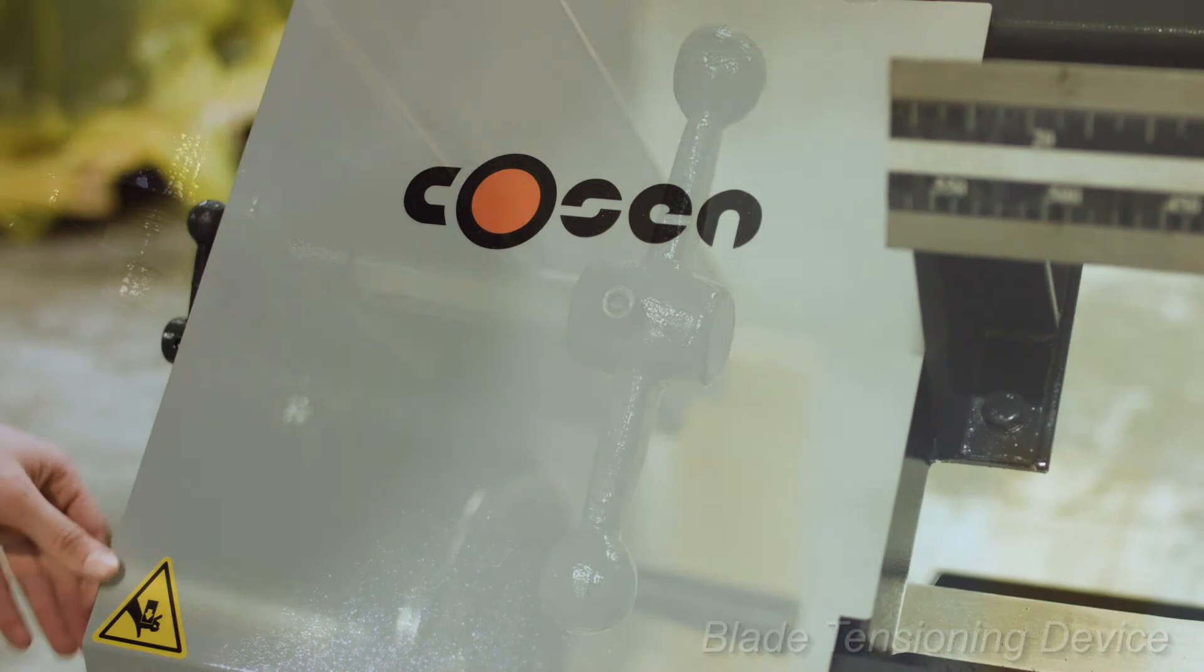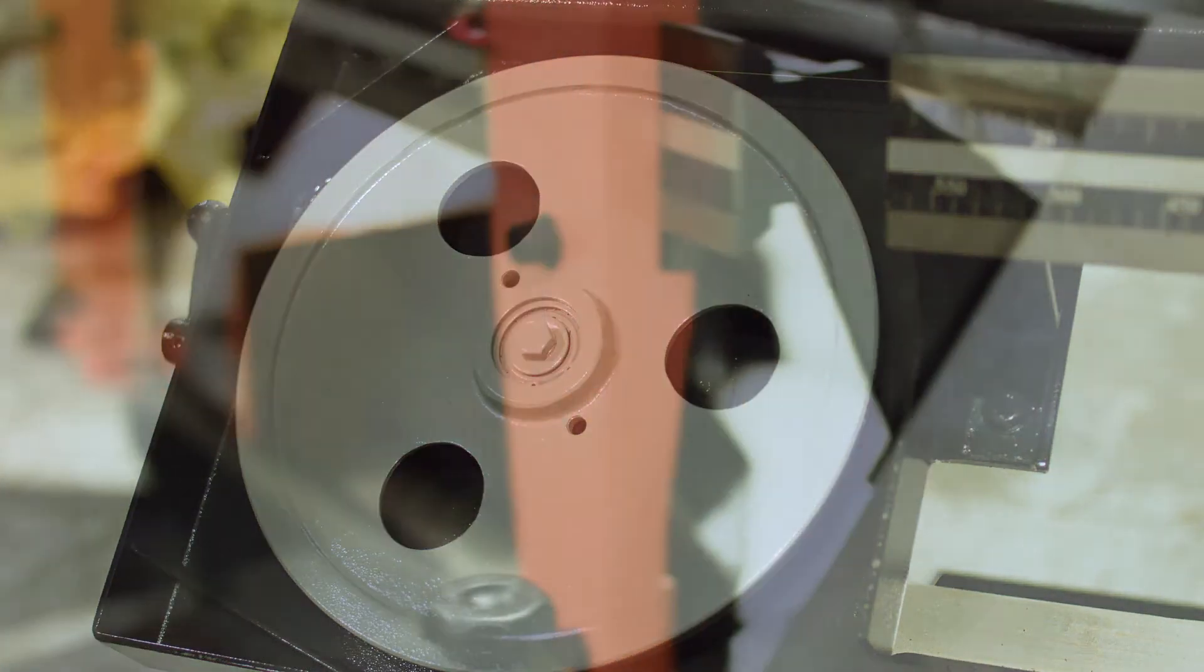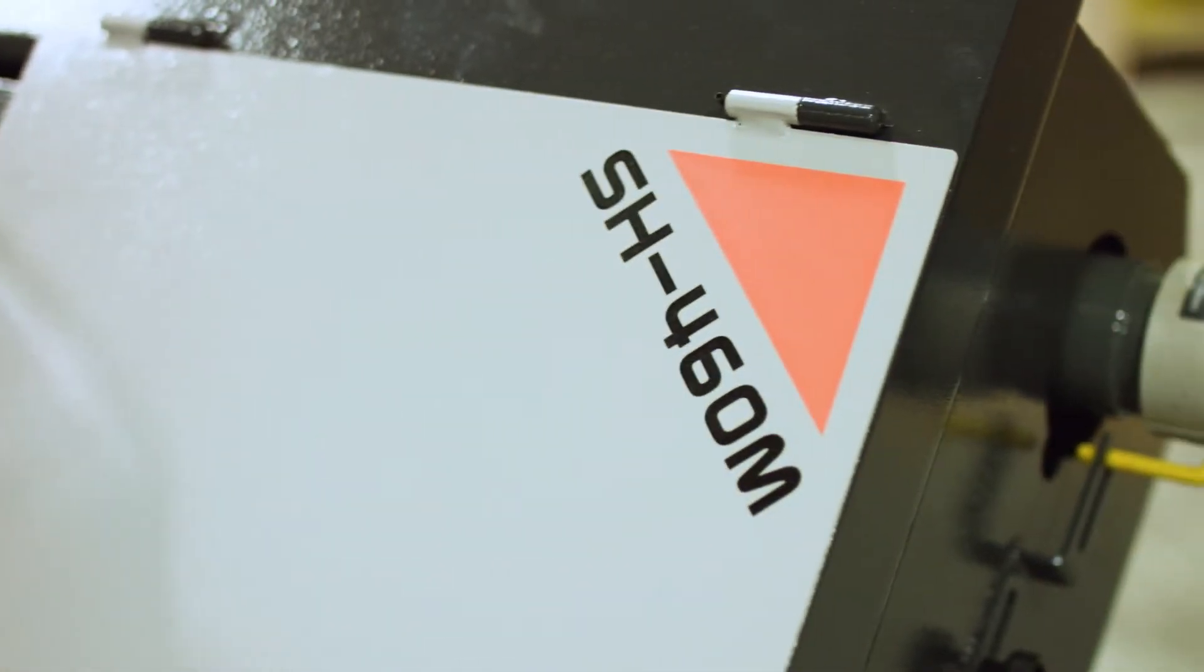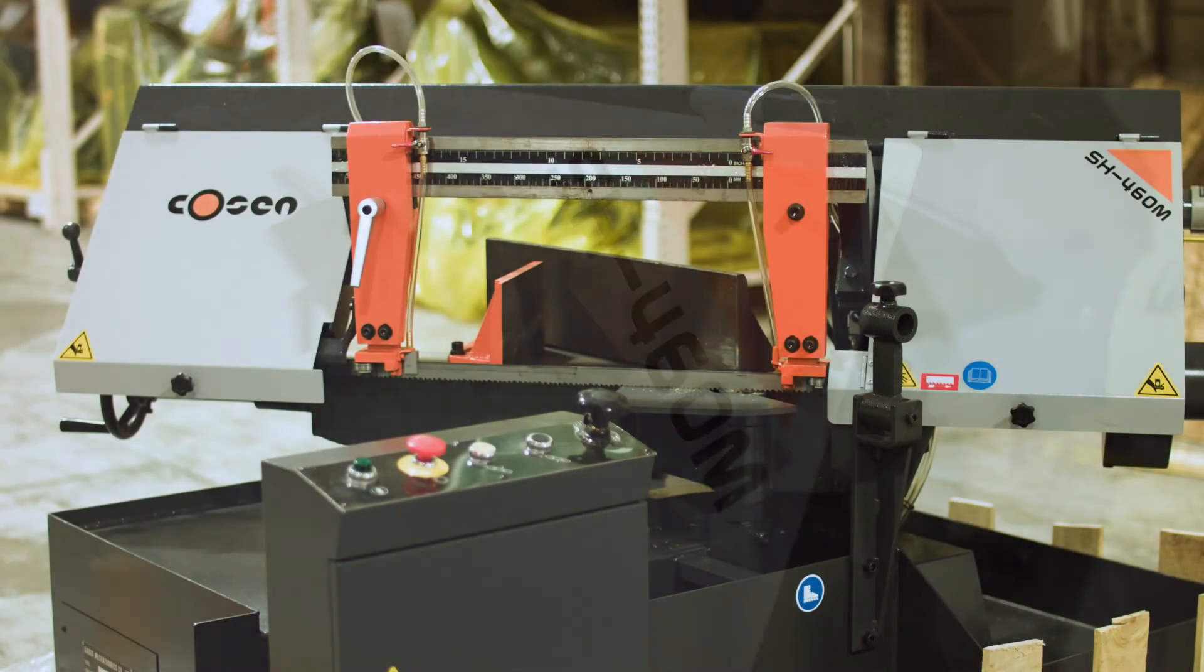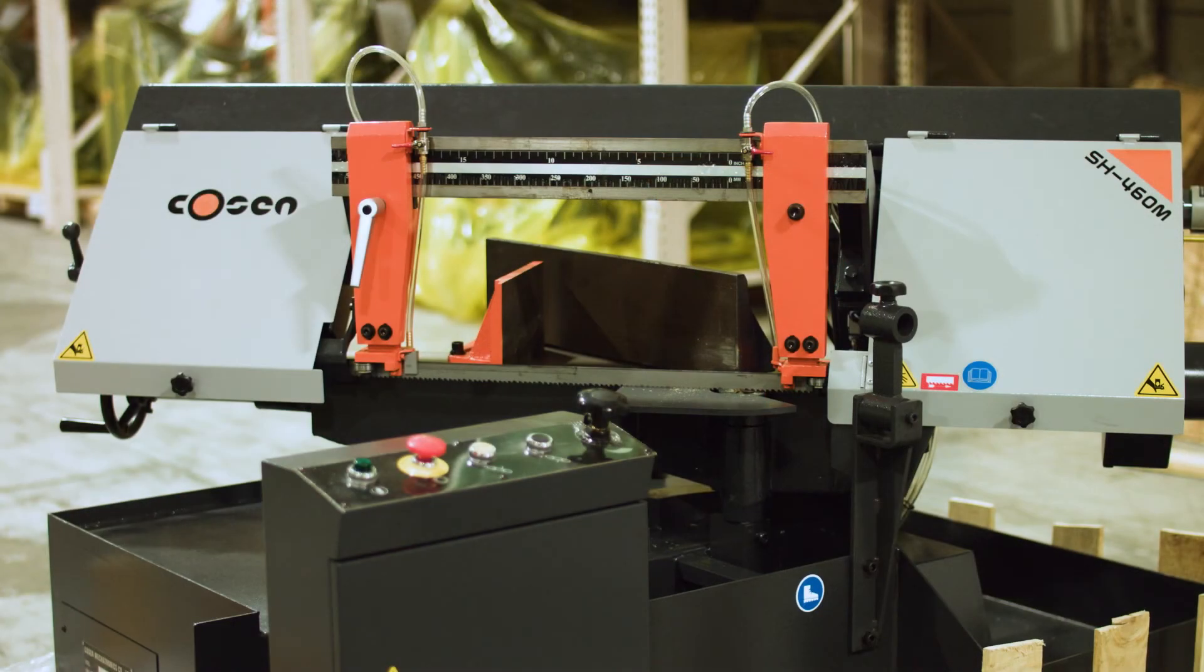With the footprint of the automatic version being the same as the manual, 55 inches long by 74.8 inches wide, this saw is perfect for fabrication shops as well as tool room applications.